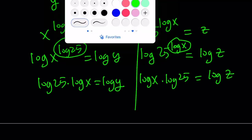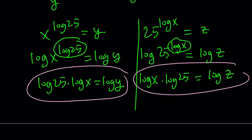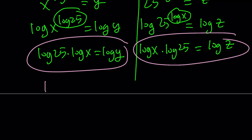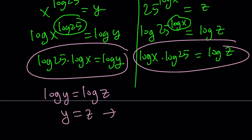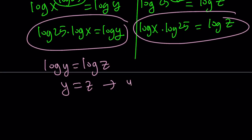What do you notice? Something interesting you should notice here. Well, the left-hand sides are the same. Log 25 times log x is the same as log x times log 25. So these two quantities are equal. What is that supposed to mean? It means that log y is equal to log z, which means y is equal to z. But what is y and what is z? They're equal. Well, they're going to share the 10 equally then. So you can write this as y plus y is equal to 10, and y is equal to 5 because 2y is equal to 10.